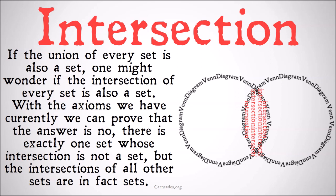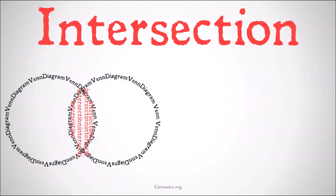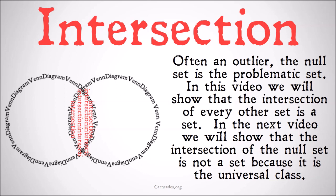If the union of every set is also a set, one might wonder if the intersection of every set is also a set. With the axioms we currently have, we can prove that the answer is no. There is exactly one set whose intersection is not a set, but the intersections of all other sets are in fact sets. Often an outlier, the null set is the problematic set. We're going to show that the intersection of every other set is a set — except the null set. In the next video we'll prove that the intersection of the null set is not a set, because it is in fact the universal class.